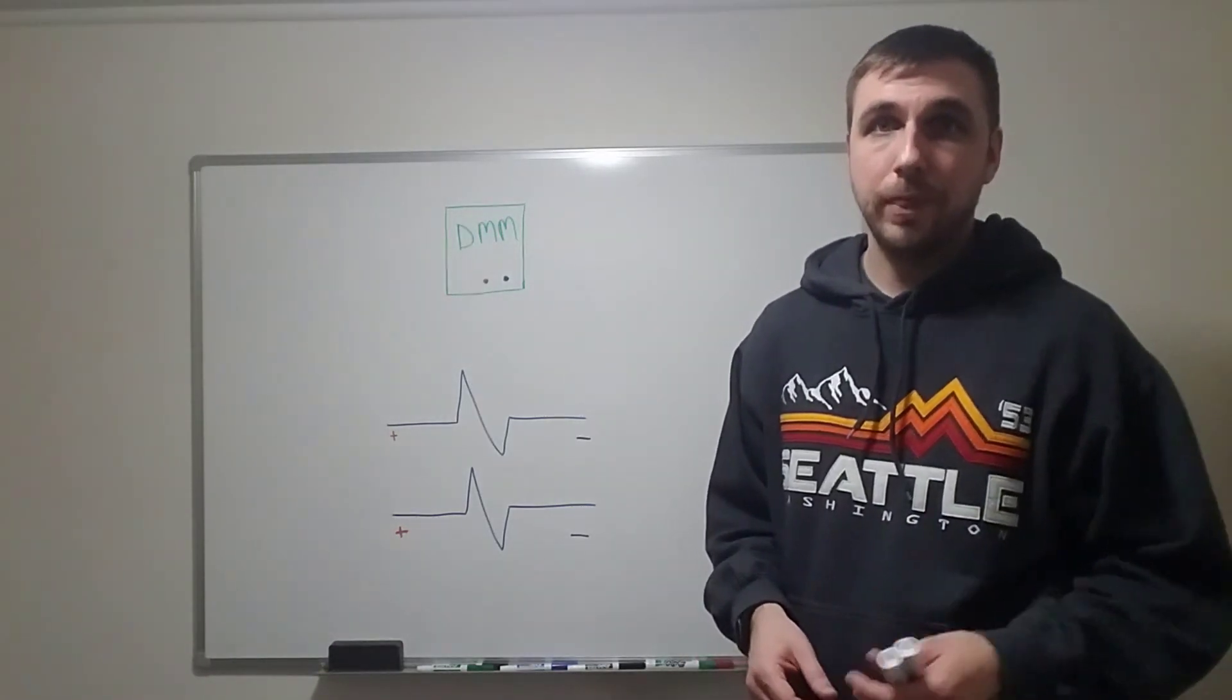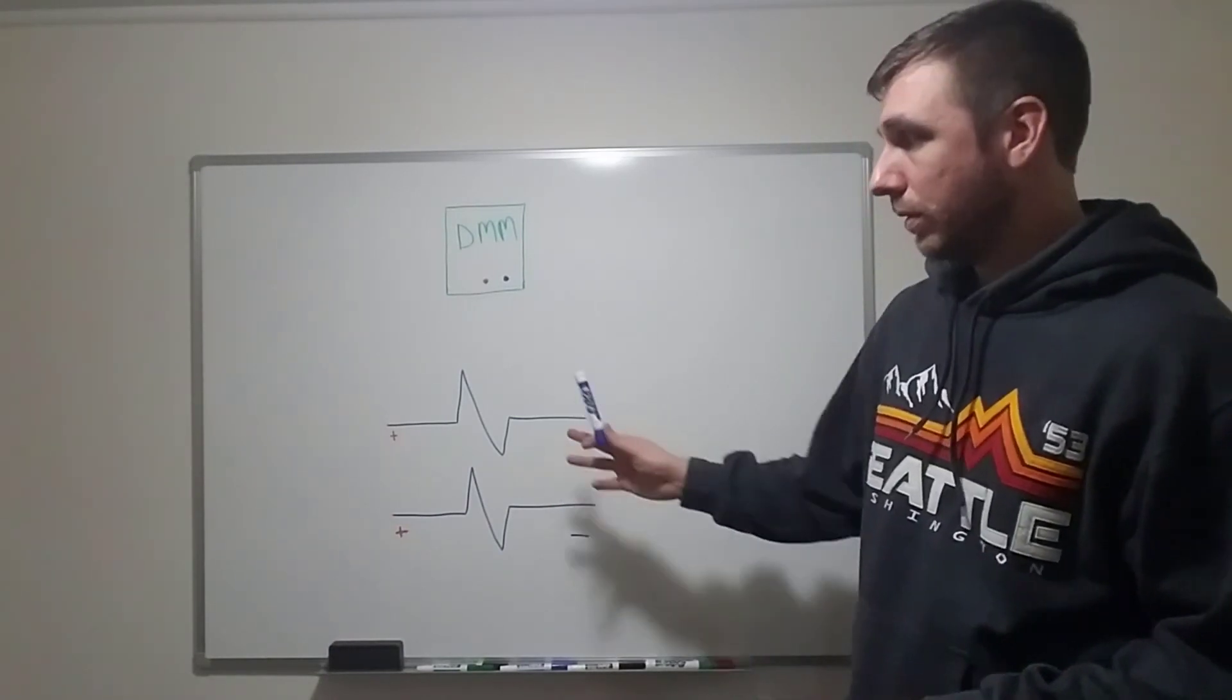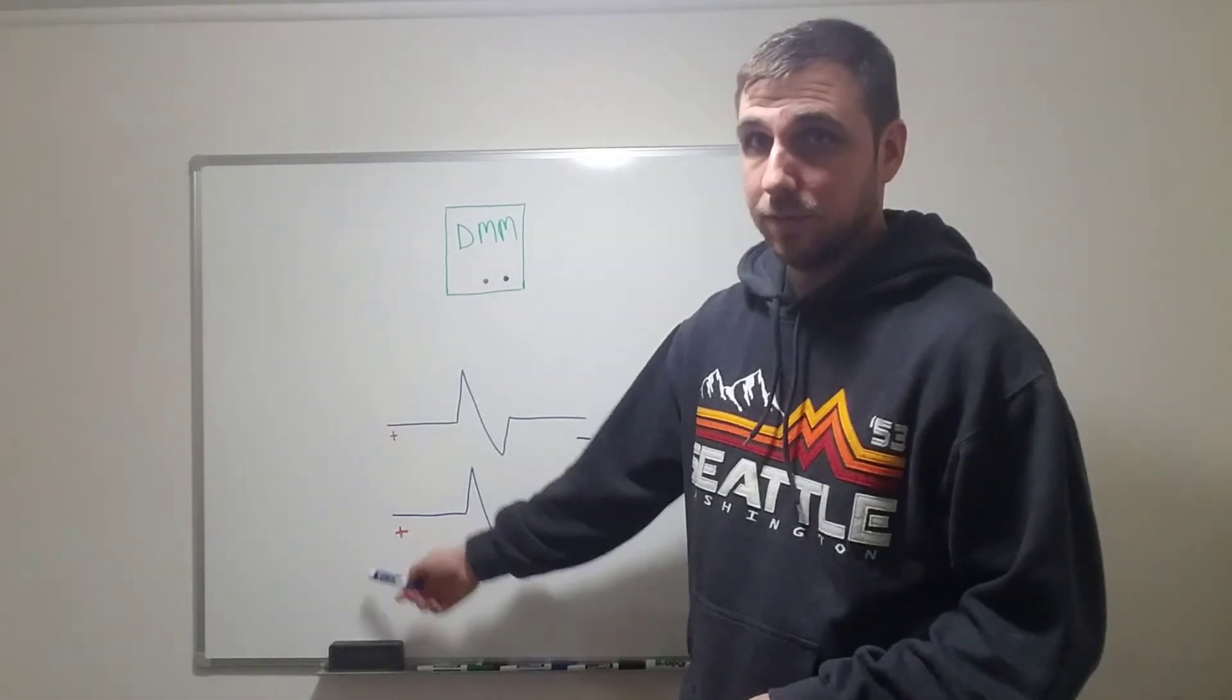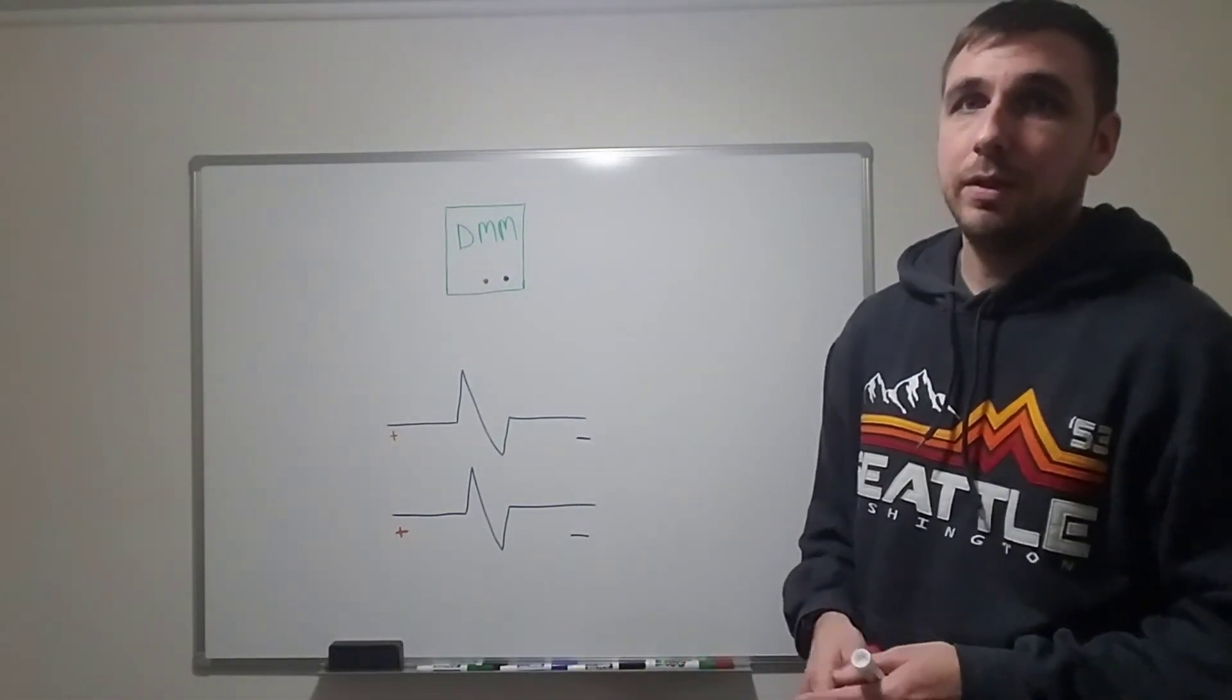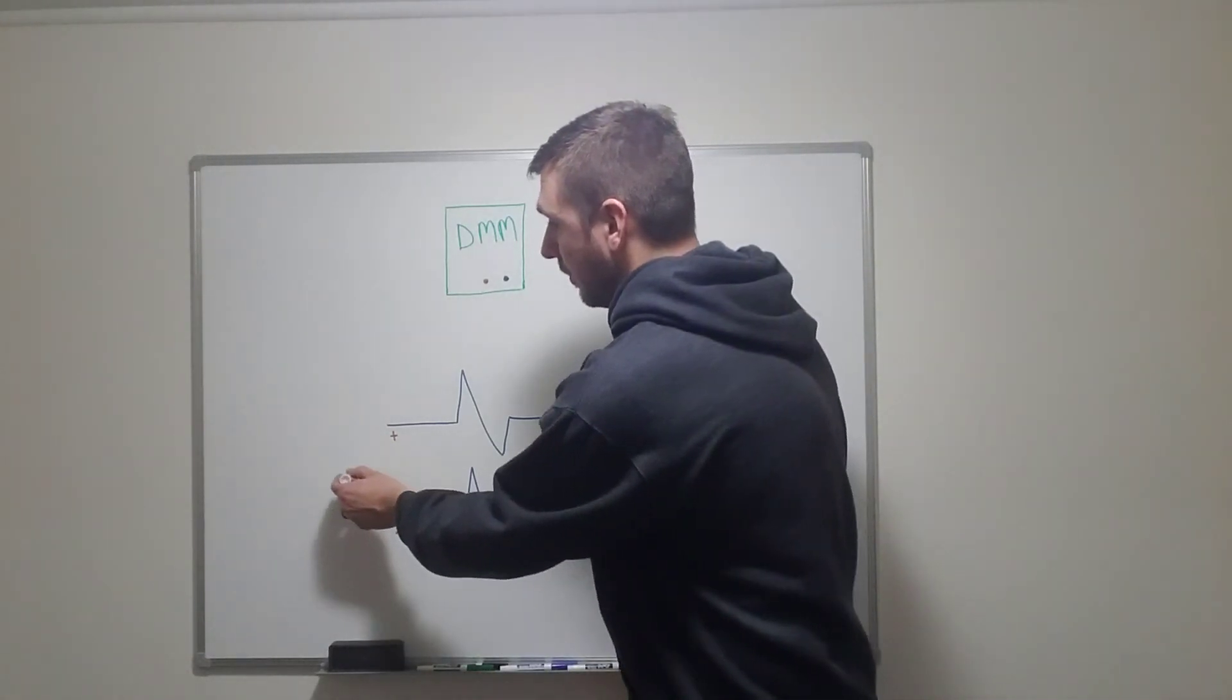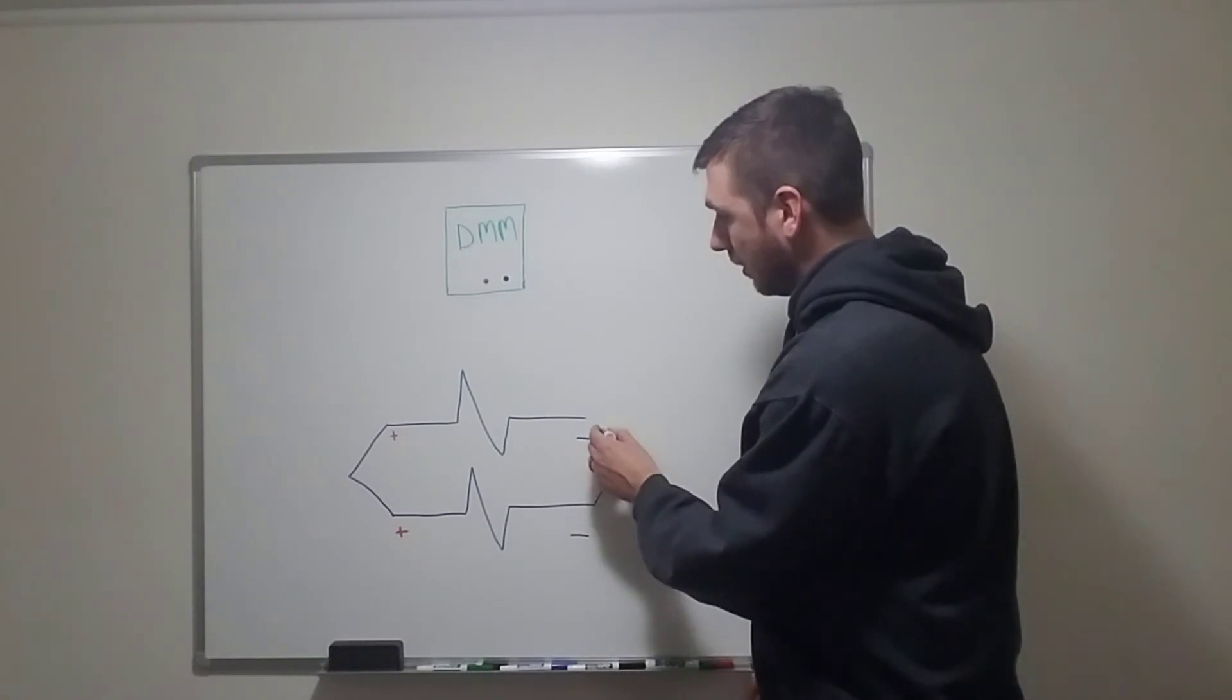Let me show you what I mean. So I've got two loads drawn here. They look like resistors, they each have a negative side and a positive side. Now in order to connect these two loads together in parallel, all I have to do is connect the two positive sides together like that and the two negative sides together like that. That's a parallel circuit.